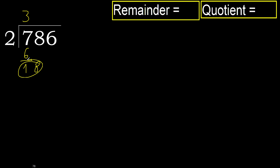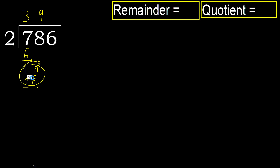18. 2 multiplied by 9 is 18, 18 is not greater, ok. Subtract. Next.